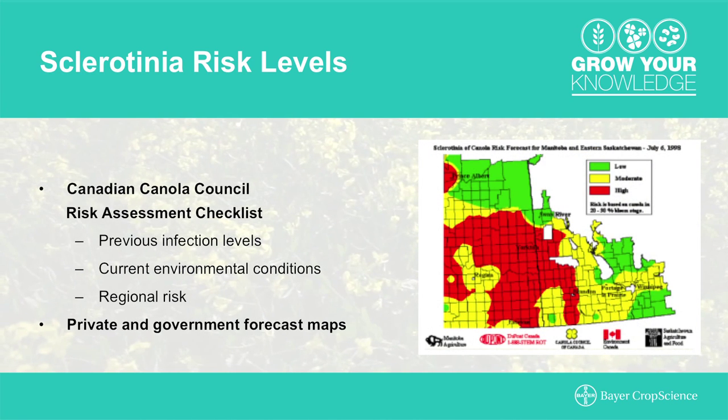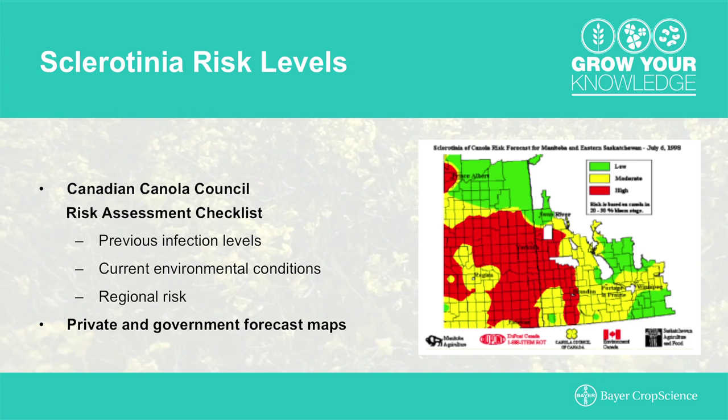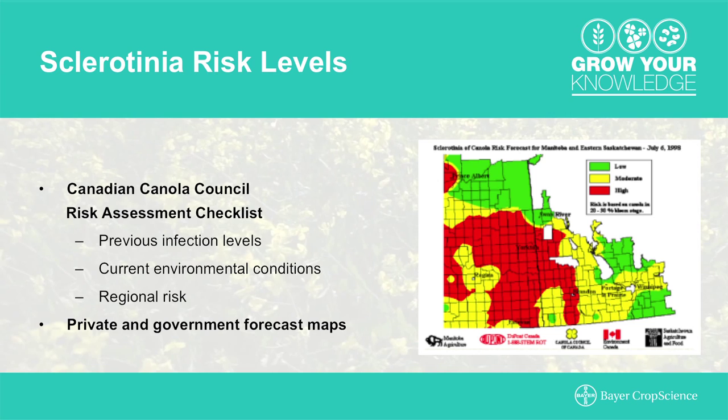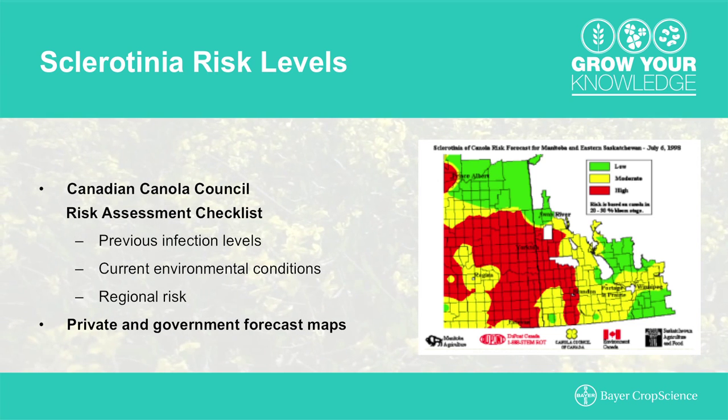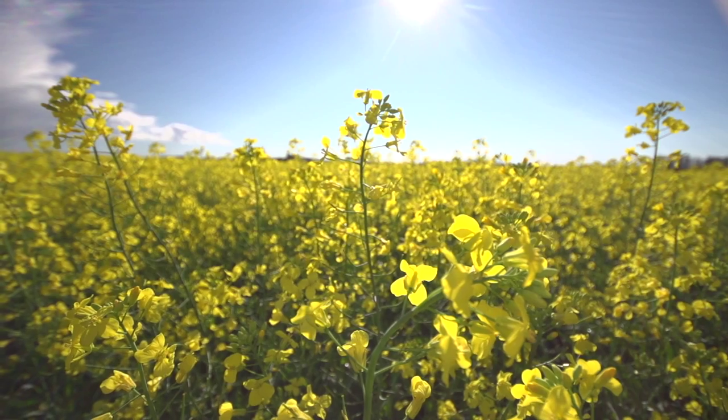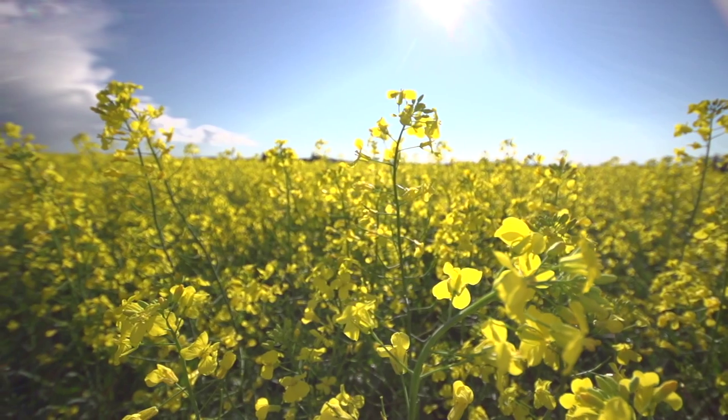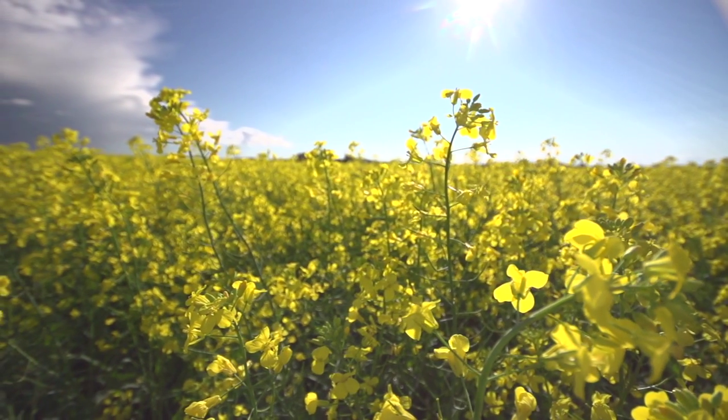Forecast maps are also available — both private and government have worked on these — and they primarily consider temperatures and forecasted moisture levels. Petal testing is another diagnostic method available, though the challenge has been that it's a fairly time-consuming process. By the time you find out whether the disease is present, you might have missed your window to apply a foliar application. However, there's a new development coming in the near future offering a four to six hour turnaround, so you can actually get into the crop and apply a foliar fungicide in a timely fashion.